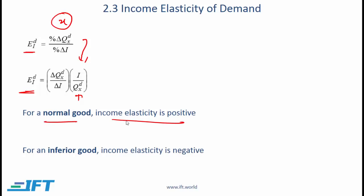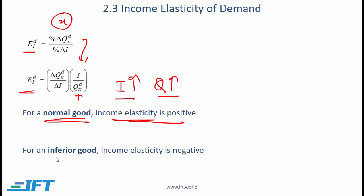For a normal good, income elasticity is positive, and most goods are normal goods. A positive income elasticity means that as income goes up, the quantity demanded for a particular good also goes up. If this is the case, we say that the good is normal.